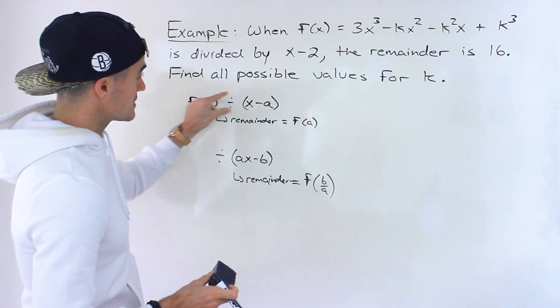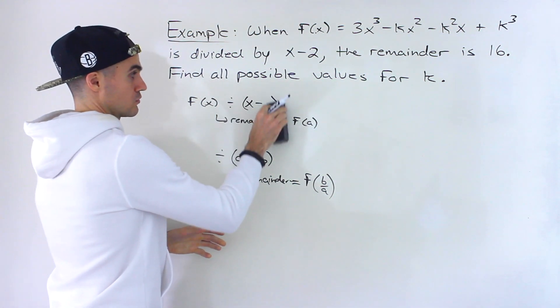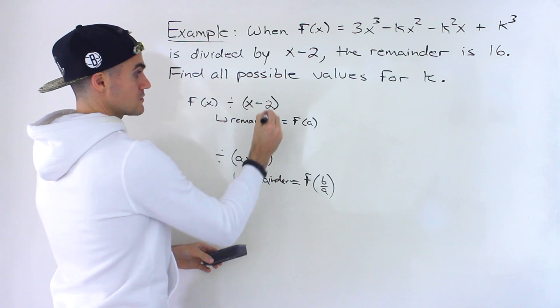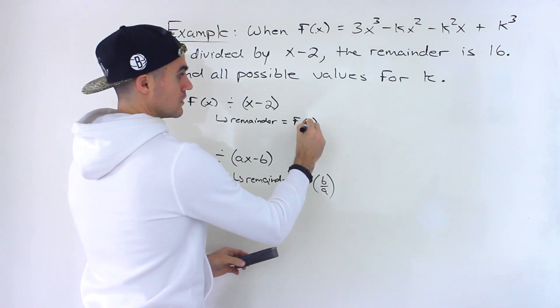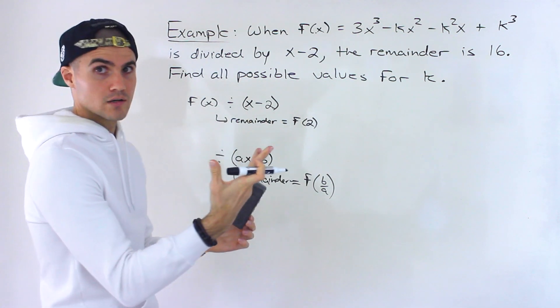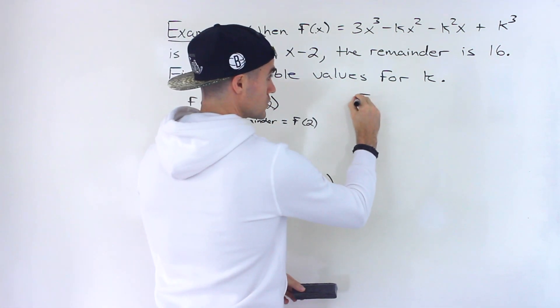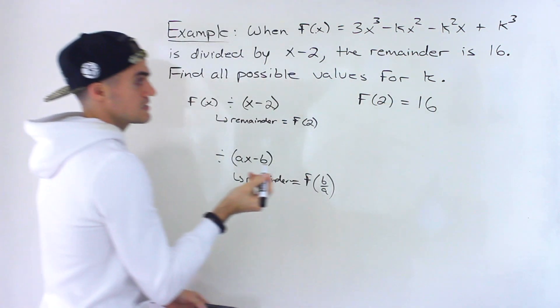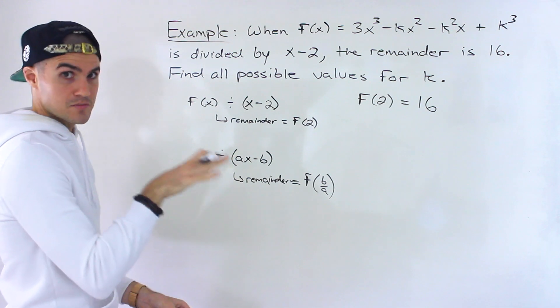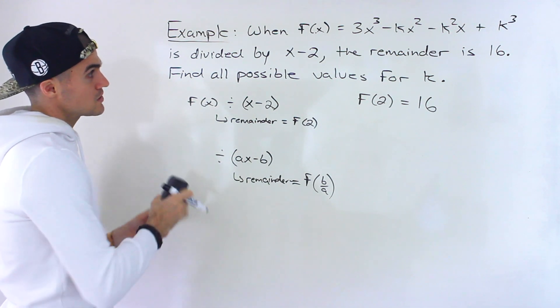Since f(x) is divided by x - 2, we plug in 2 for a. That means the remainder equals f(2). We're given the remainder is 16, so the general equation is f(2) = 16. That's the general statement for this question, and that's all we need.